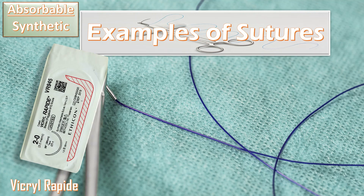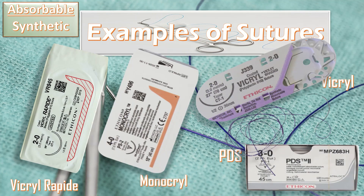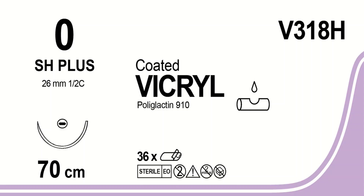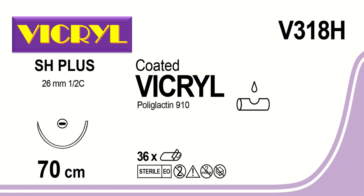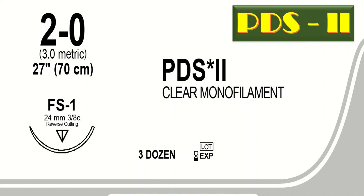Among absorbable synthetic sutures, Vicryl Rapid is a synthetic absorbable braided suture absorbed within 42 days. Vicryl (polyglactin 910) is also a synthetic absorbable braided suture with a longer mass absorption time of 56 to 70 days. PDS has a mass absorption time of six months and is a synthetic absorbable monofilament.